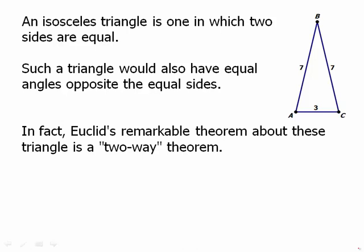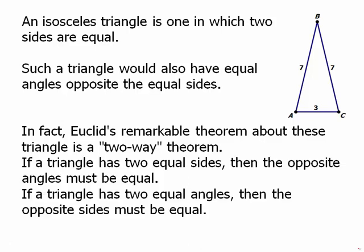Euclid's remarkable theorem on this topic is a two-way theorem. If a triangle has two equal sides, then it must have the opposite angles equal. And if it has two equal angles, then the opposite sides must be equal. So from the sides you can deduce the angles, and from the angles you can deduce the sides. It's a two-way theorem.